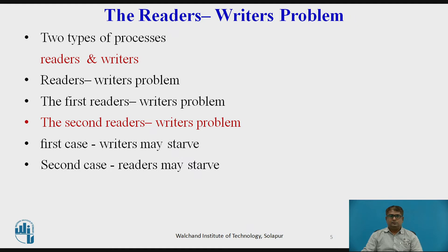Suppose that the database is to be shared among several concurrent processes. Some of these processes may want to only read the database, whereas others may want to update it — that is, perform both read and write operations on the database. We will distinguish between these two types of processes by referring to the former as a reader and the latter as a writer.